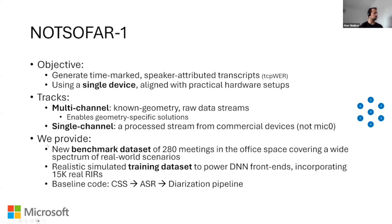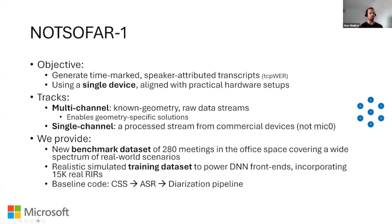As part of this task, we provide two new datasets. One is a benchmark dataset of almost 300 meetings in office spaces, covering a really wide spectrum of real-world settings. The second dataset is for training. We hope it is useful for powering deep learning frontends, and it uses 15,000 real RIRs — room impulse responses.